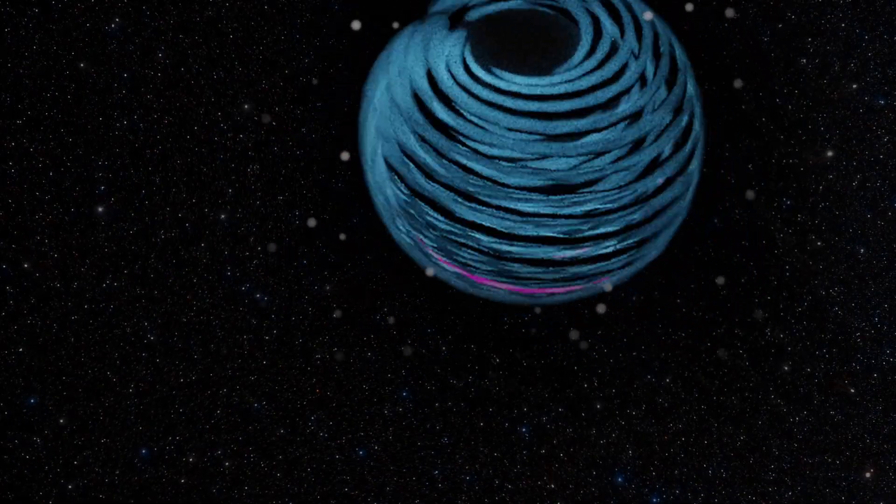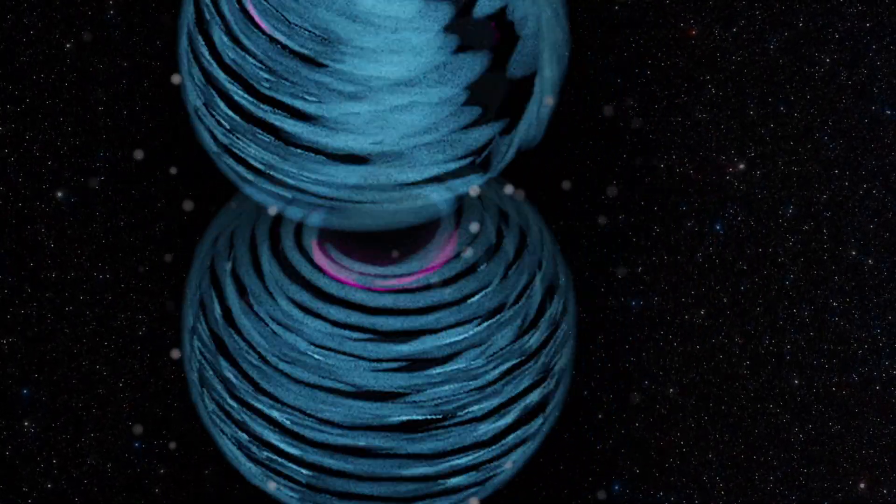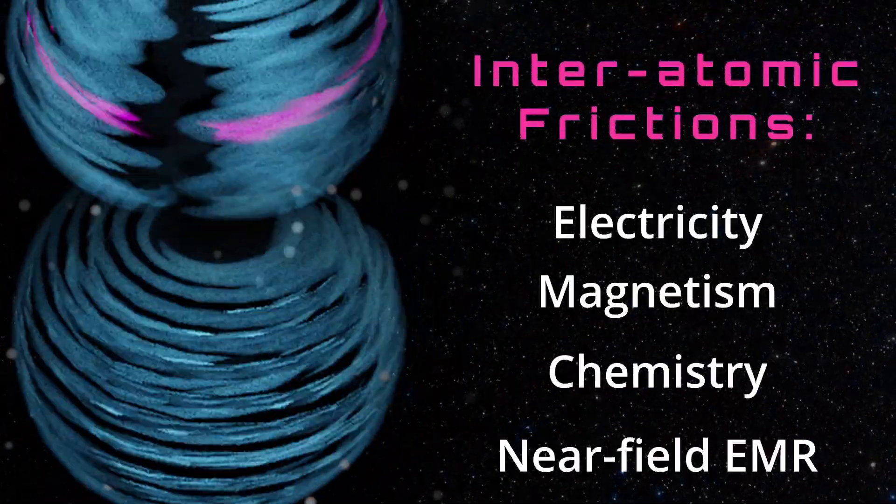When atoms undergoing this motion come into contact with other atoms, their rotational friction propagates throughout the material and generates electricity, magnetism, chemistry, and near-field radiation.